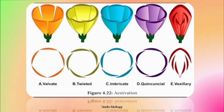In valvate, there is no overlapping of margins. In twisted aestivation, one margin is in and one margin is out. In imbricate, there are two types but three different terms: only imbricate has one in, one out, and three in and out; ascending imbricate has anterior one completely out, any one in, and three in and out; in descending imbricate, posterior is completely out, two laterals are in and out, two anterior are small and completely enclosed. In quincuncial, two are completely in, two are completely out, and one is in and out. This is how sepals or petals are arranged on the receptacle or thalamus.